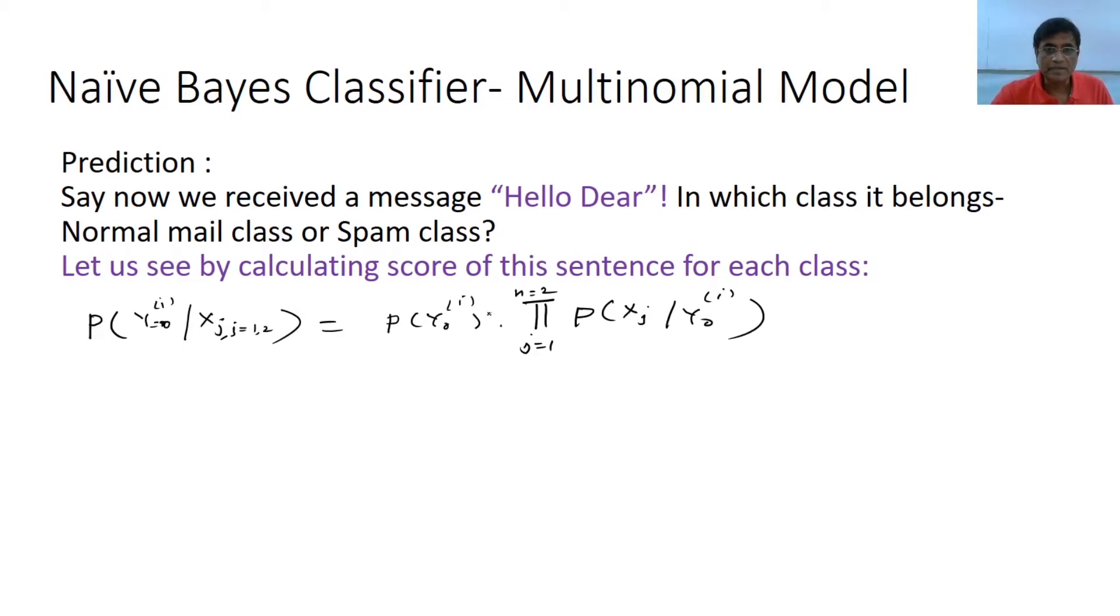So all the ingredients are there. What is the prior probability of the class we have calculated? If you remember it is 0.67 and all the words we have a probability of seeing in my table. So let us just try to calculate them.